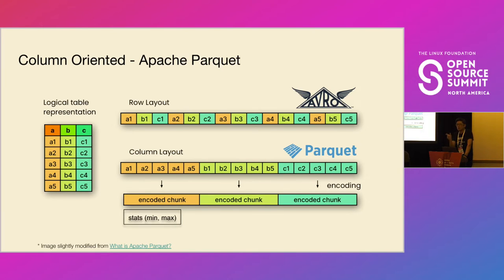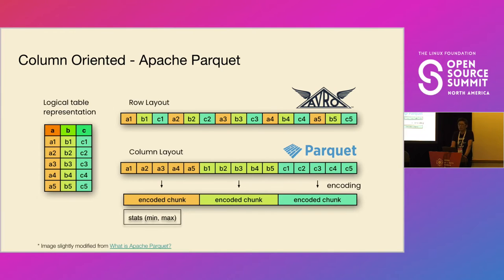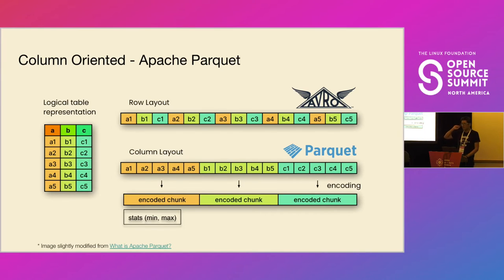With Parquet's columnar layout, if you only care about one or two columns you don't need to read all the others — you can jump with pointers to specific parts of the file. This makes reading faster. In distributed data processing, reading as little as possible is the goal — you don't want to read more because it's too costly. Additionally, these formats store statistics like mean value or max value, so you can immediately answer certain queries without even reading the data.